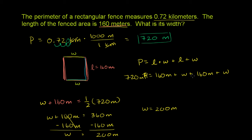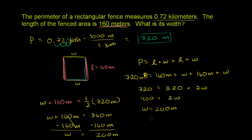The other way is to go straight from the original equation. 720 equals 160 plus 160, which is 320, plus the width plus the width — or two times the width. So 2W plus 320 equals 720. What plus 320 is 720? That thing must equal 400. Or do it formally: subtract 320 from both sides to get 2W equals 400, then divide both sides by 2. Either way, you get width equals 200 meters.